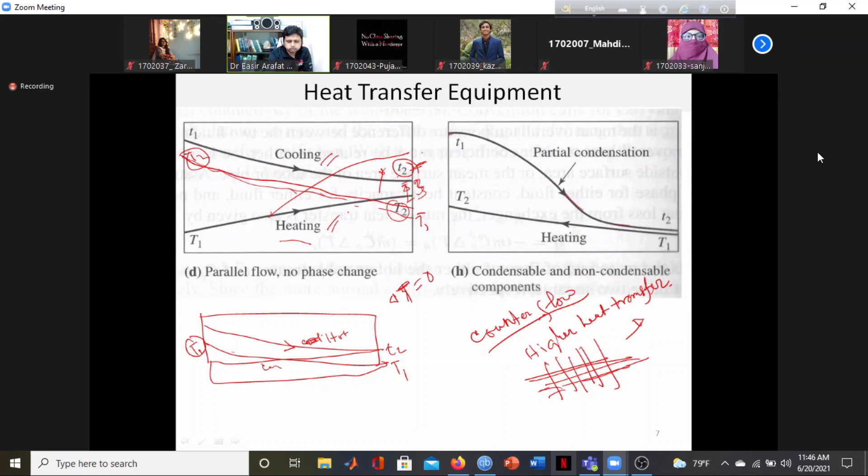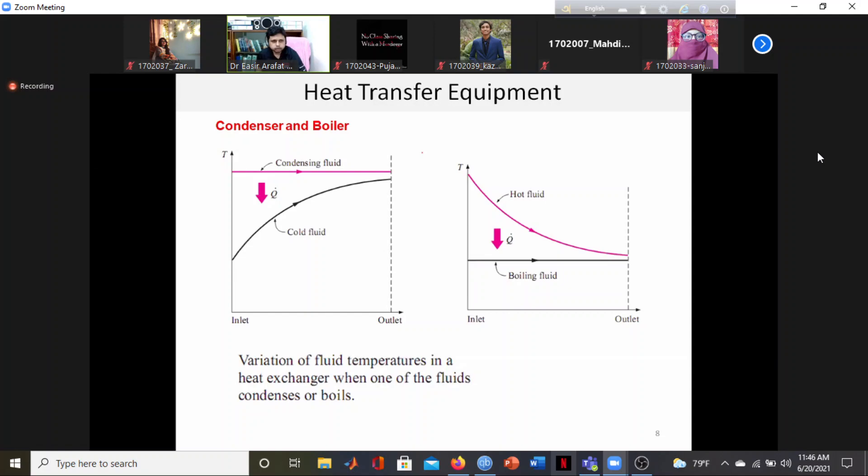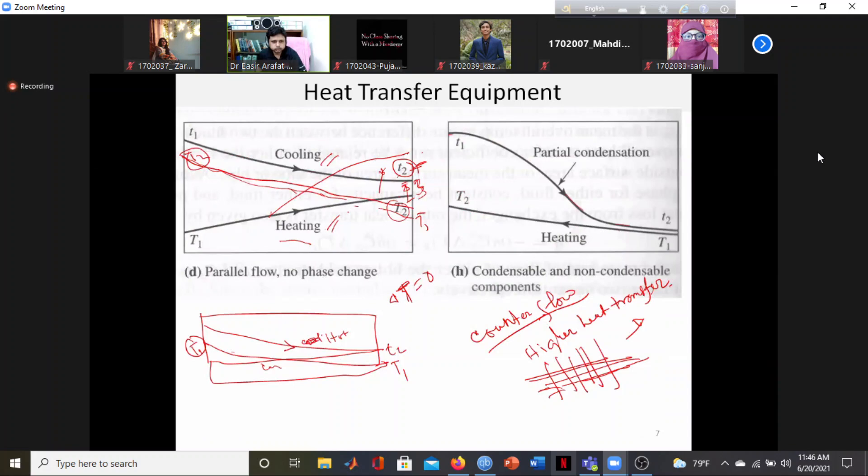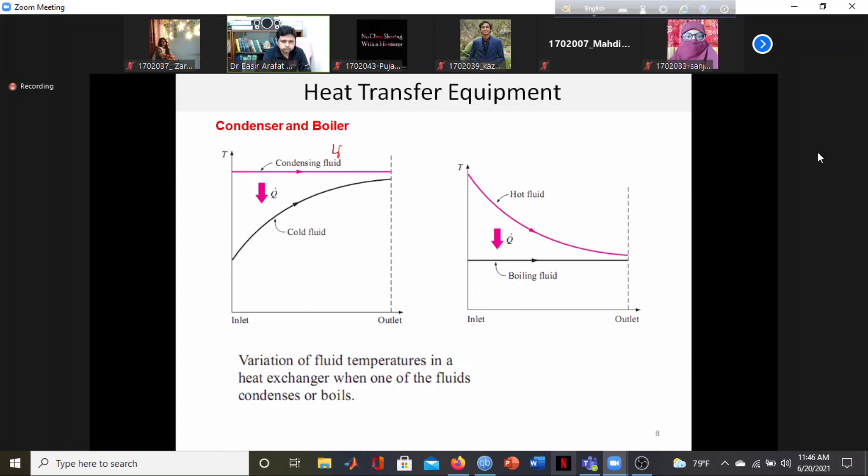In condensation and boiler applications, when condensing liquid like steam condenses, the cold fluid accepts heat. For boiling liquid at low temperature near saturation, it can boil from the surface. At the hot fluid surface, the liquid accepts heat, bubbles form, and heat is released.